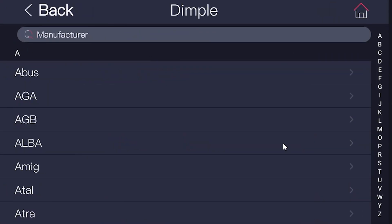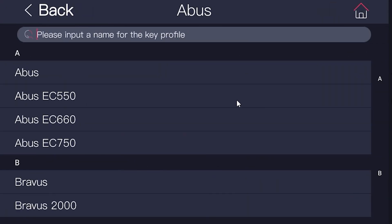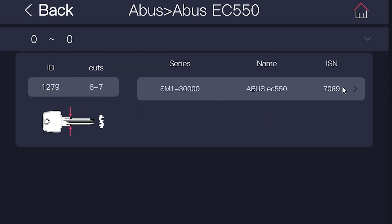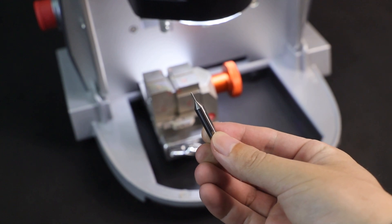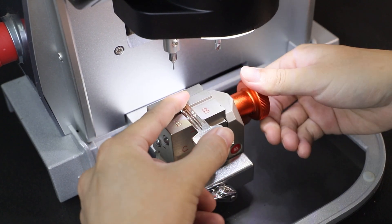Click dimple and select Abu's Abu ZC 550 ID 1279. Install a dimple decoder. This key is shoulder aligned.